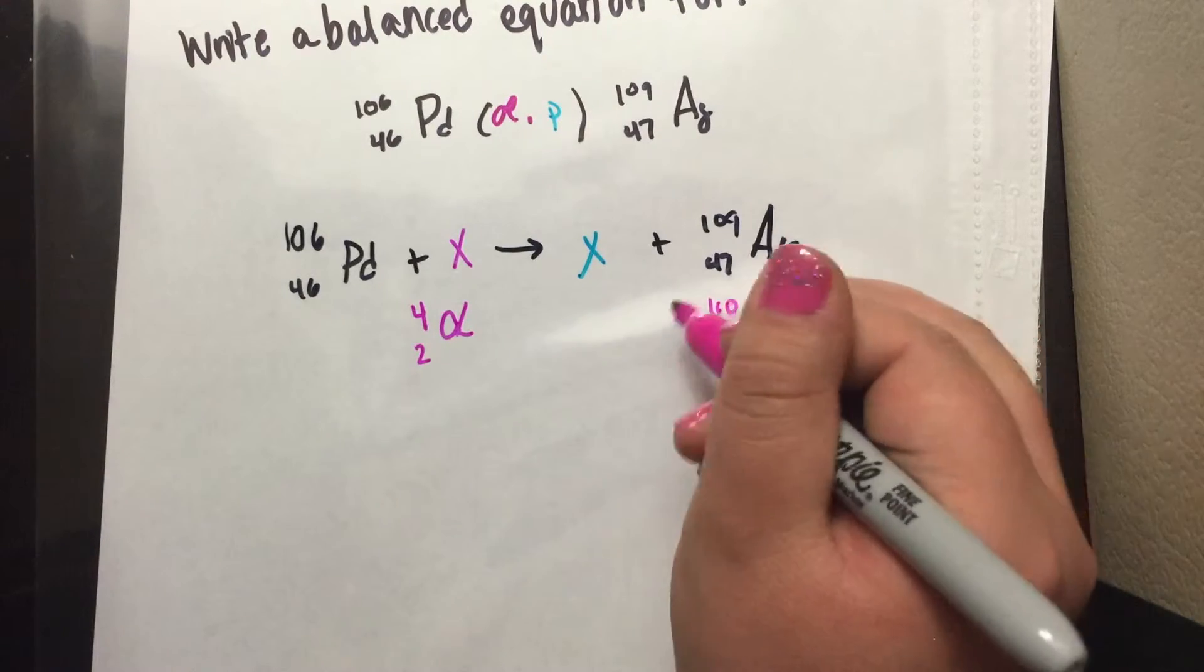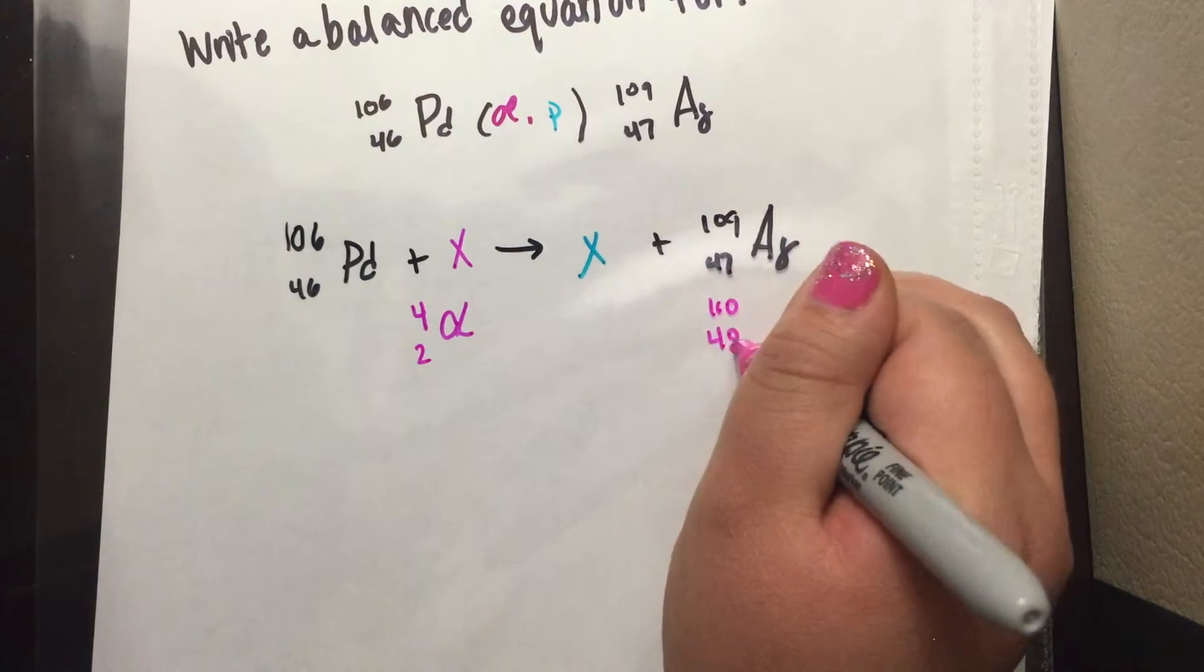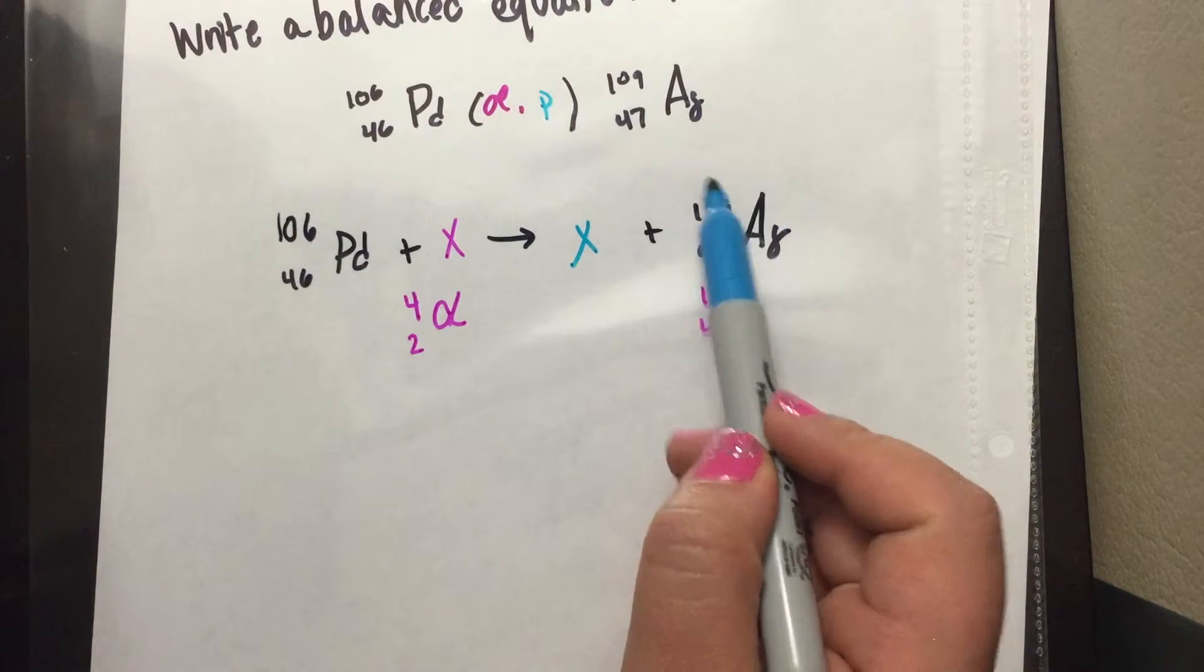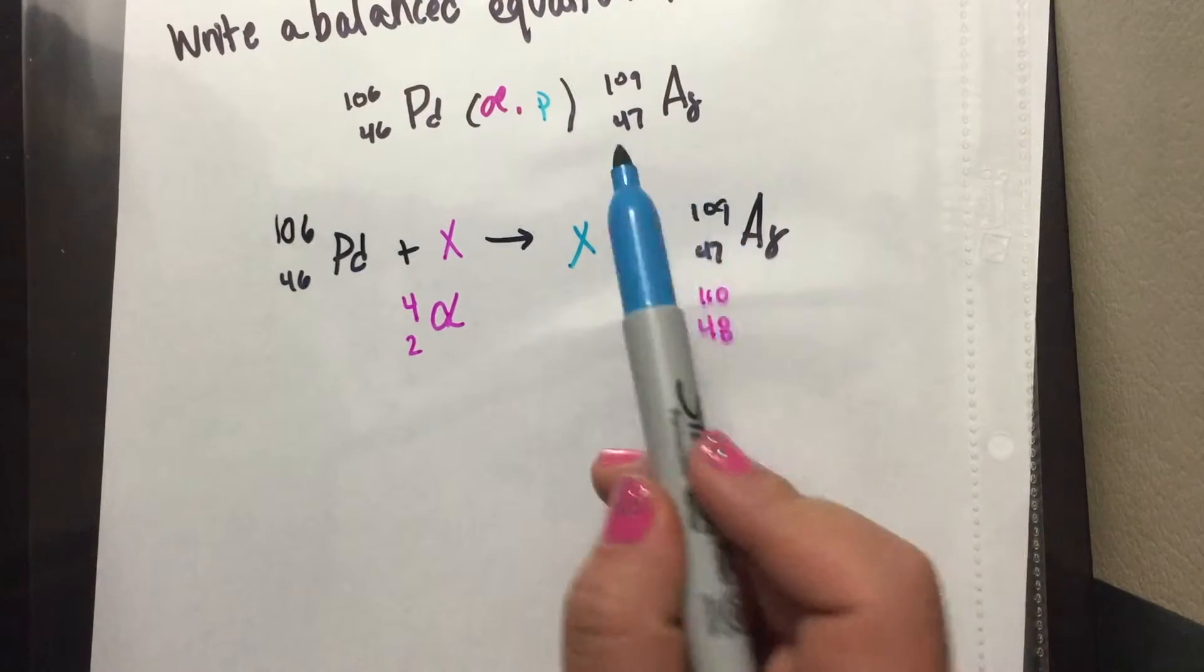And over here, this would equal to be 110 and 48 when you add the 4 plus the 106 and the 2 plus the 46. So we need to get these numbers.